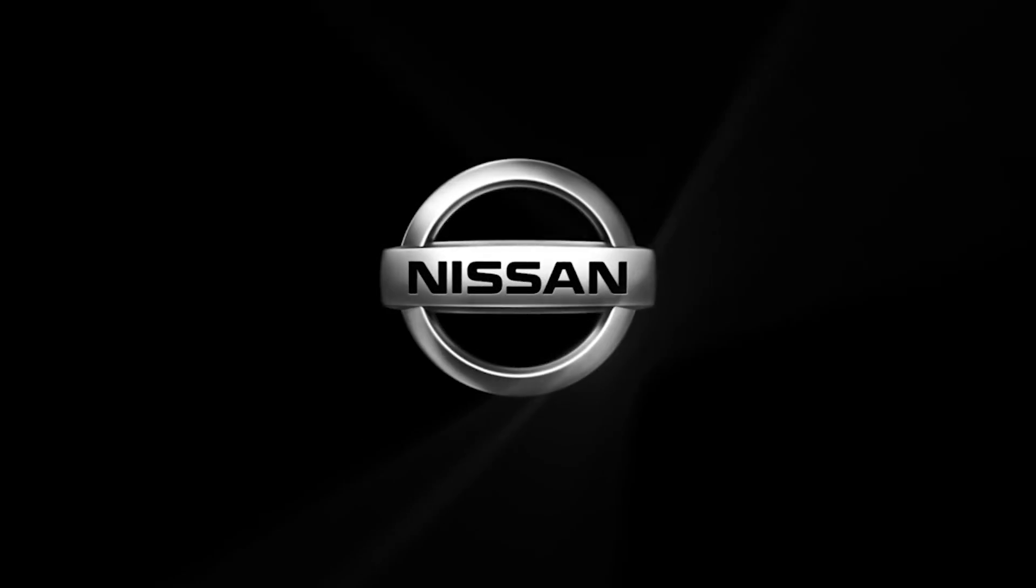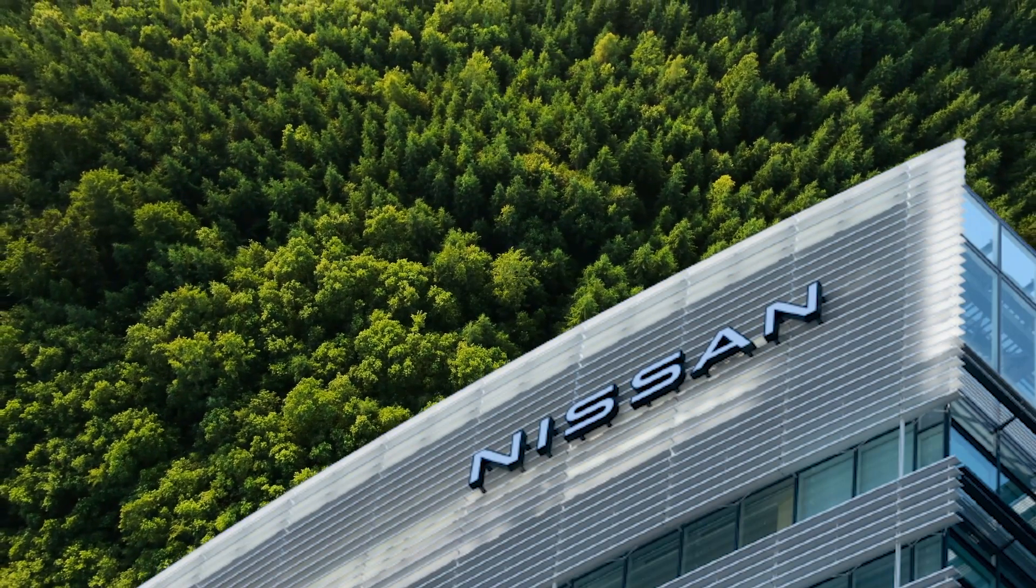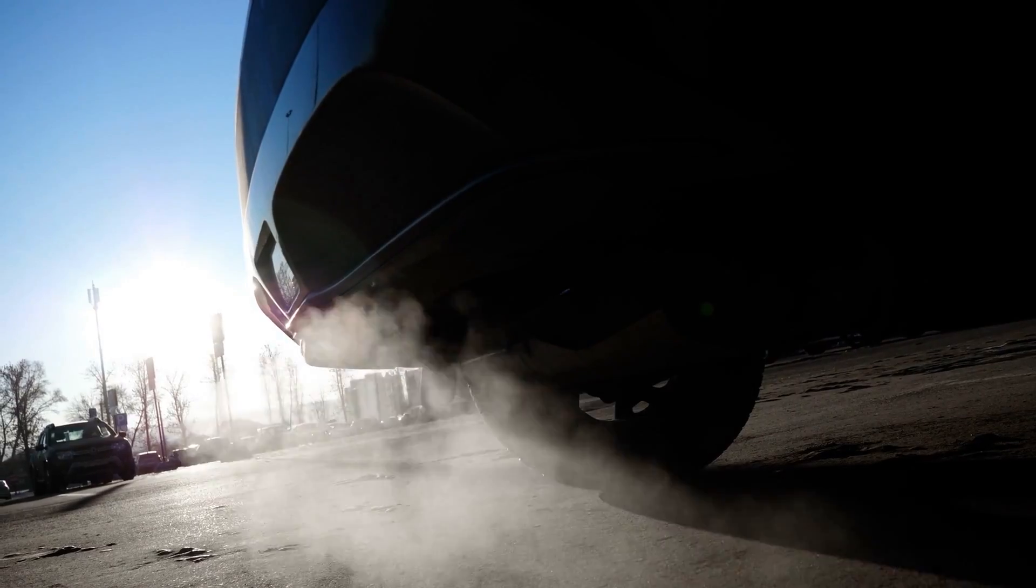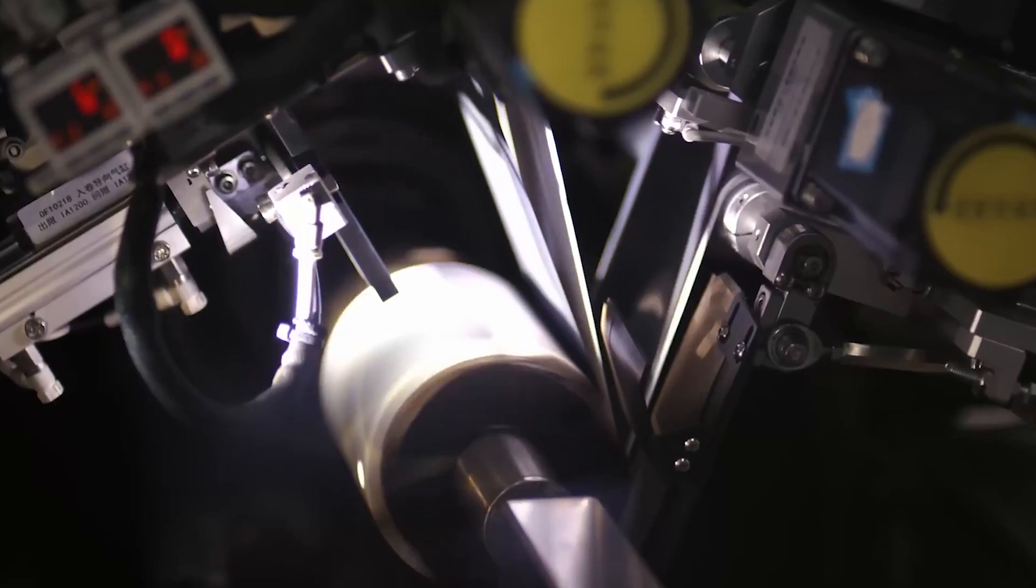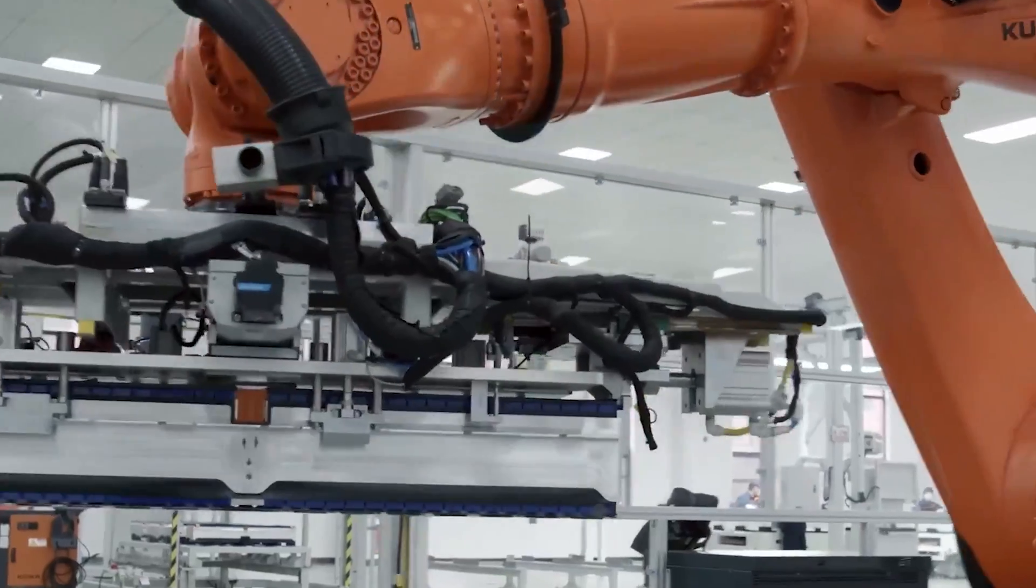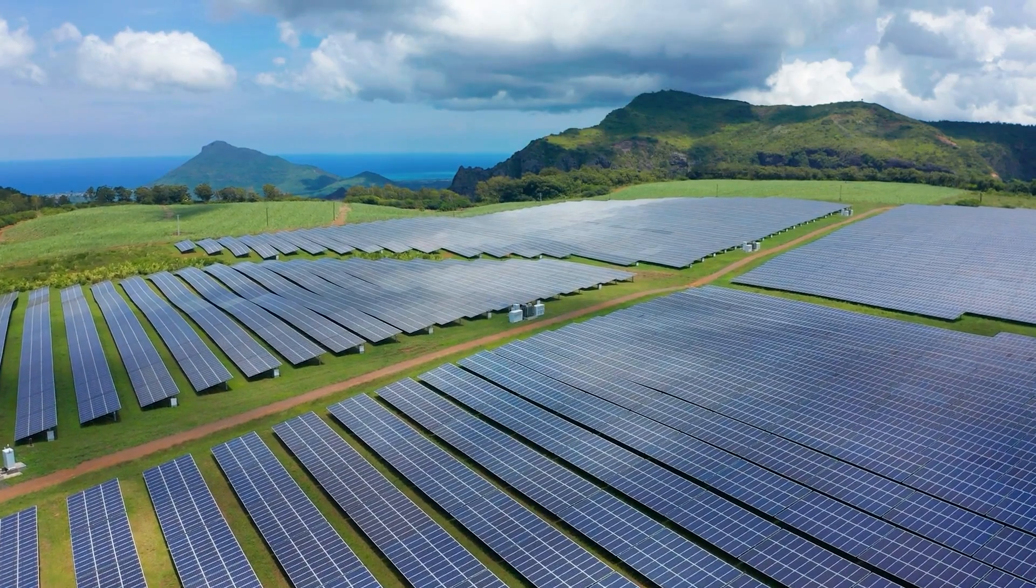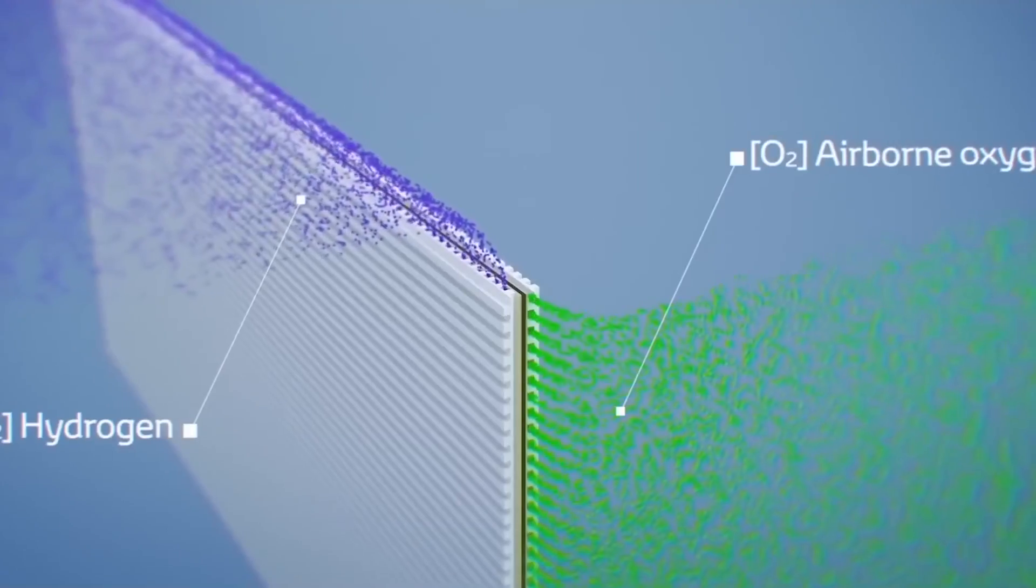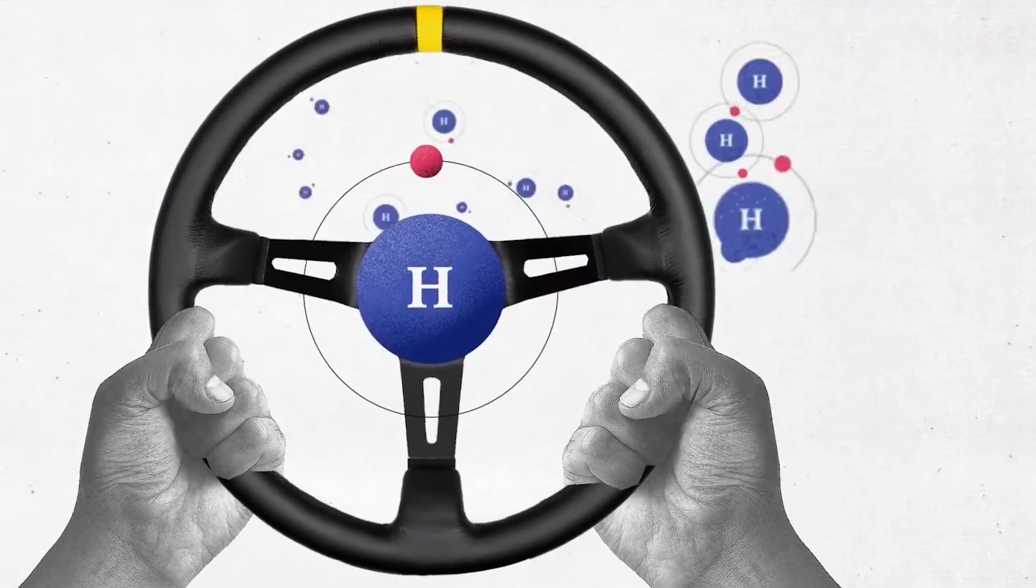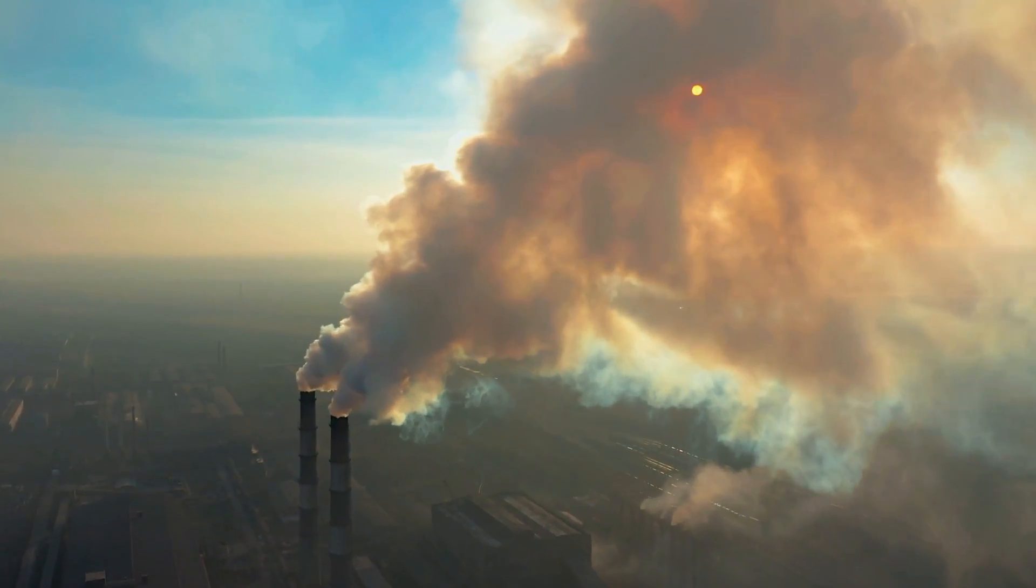Moreover, Nissan's decision aligns with the company's long-standing commitment to sustainability and environmental responsibility. While EVs have been hailed as a cleaner alternative to internal combustion engines, the production and disposal of batteries present their own set of environmental challenges. Hydrogen, as a fuel source, can be produced using renewable energy, reducing the carbon footprint associated with its production and use. This shift to hydrogen aligns with Nissan's goal to promote a zero-emission society and address the long-term challenges of climate change.